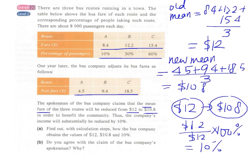Part B asks: do you agree with the claim of the bus company's spokesman? Why? Actually, we should not agree because we have to take into account the percentage of passengers. Since the number of passengers is not the same for each route, simply dividing the bus fares by three is not appropriate.